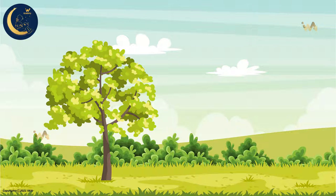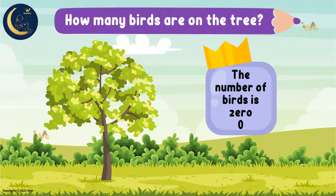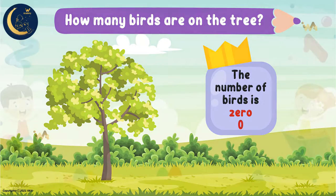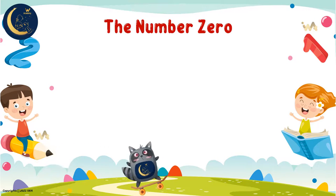The birds have flown away. Can you tell me how many birds there are now? How many birds are on the tree? You should say there aren't any birds on the tree. Correct. So when there aren't any birds on the tree, we say the number of birds is zero. And we write the number zero like this. So this is the number zero.